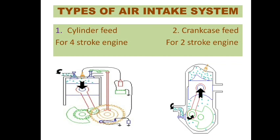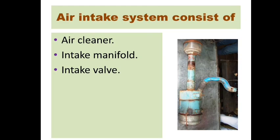There are two types of air intake systems, differentiated on the basis of four-stroke engines and two-stroke engines. In four-stroke engines the air intake system is cylinder feed, whereas crankcase feed system is observed in two-stroke engines. They are regulated by cylinder feed and crankcase feed respectively.